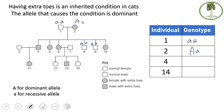Individual 4 is an affected male, so he has at least one capital A. Looking at his parents — individual 1 can only give small a, so individual 4 must have inherited capital A from individual 2. Therefore individual 4 is capital A small a. Individual 14 is normal, so their genotype must be small a small a.